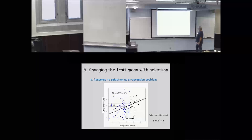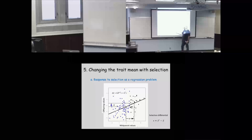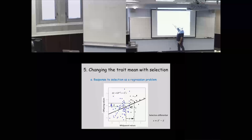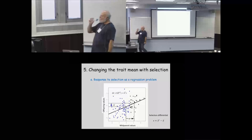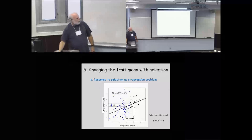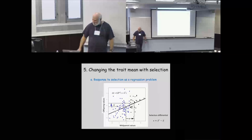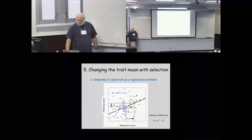Another phrase from Jay Lush: heritability is the fraction of the selection differential that is translated into the next generation. Heritability varies between 0 and 1 — it's the fraction of S that becomes the change in means across generations. That's a nice way of thinking about it that probably saved many of his students on exams.